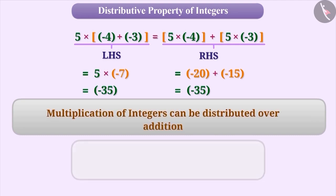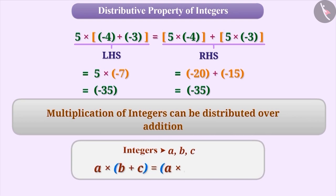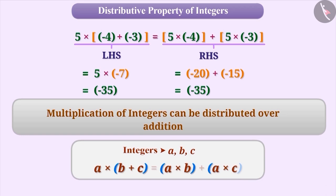Broadly, for any three integers A, B, C: A × (B + C) = A × B + A × C. The distributive property tells us that we can either add the integers inside the brackets and then multiply the result with the number outside the brackets, or multiply the number outside the brackets with each number inside the brackets and then add the results.